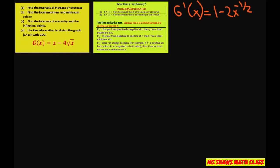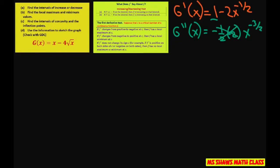Taking the second derivative: the 1 differentiates to 0, and for the remaining term you get negative one half times 2 times x to the negative 3 halves. The negative one half and 2 cancel out, giving us g double prime of x equals x to the negative 3 halves.